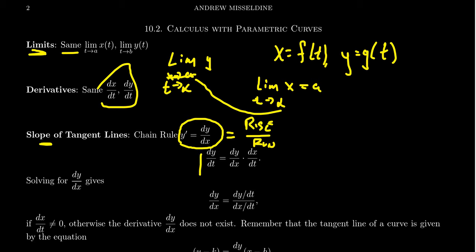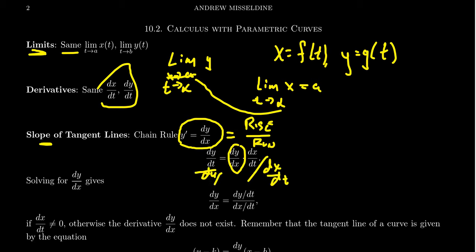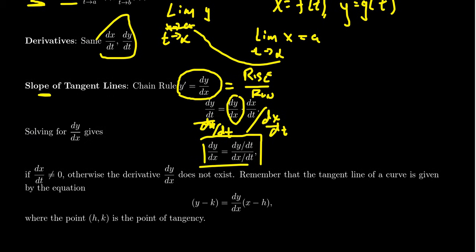Notice that dy over dt, by the chain rule, is going to equal dy over dx times dx over dt. The dx terms cancel and you get dy over dt. To solve for dy over dx, just divide both sides by dx over dt. So dy over dx equals the derivative of y with respect to t divided by the derivative of x with respect to t.